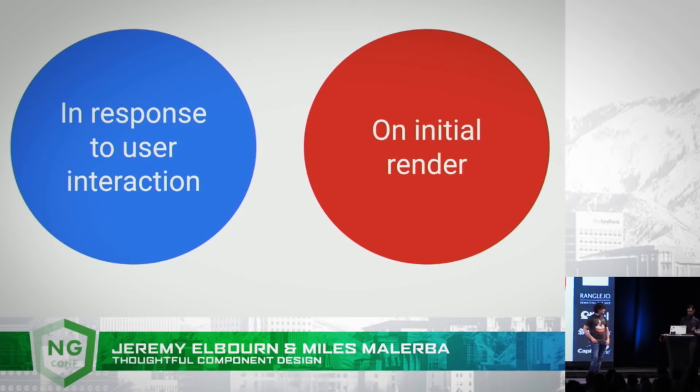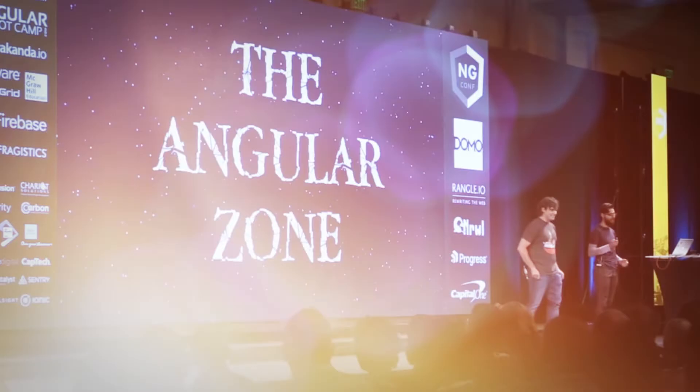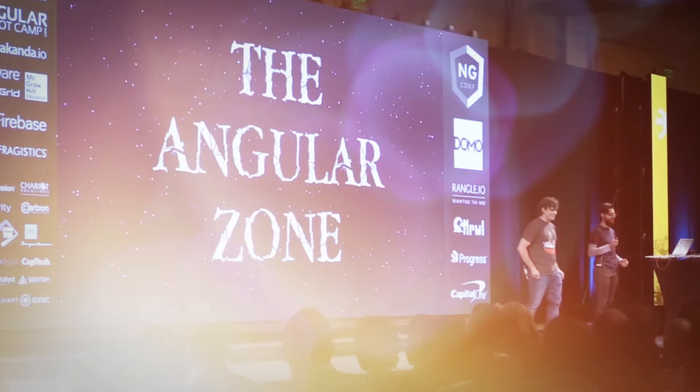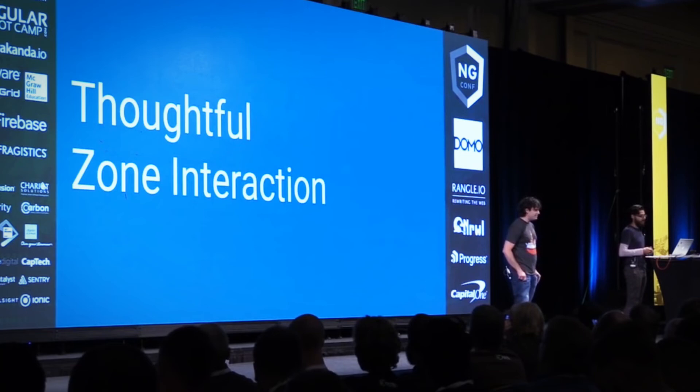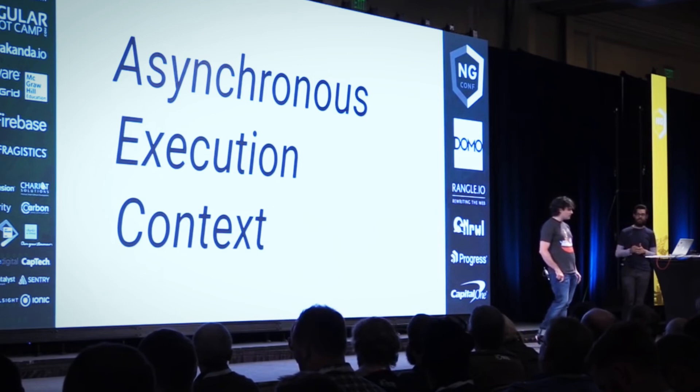Angular has really good protections built into it to guard against XSS vectors in your application. If you circumvent Angular's APIs and start building large swaths of your application on your own, in particular having thoughtful interactions with the Angular zone — if you don't know what it is, zone is something that Angular depends on. It provides an asynchronous execution context for the Angular application. There are a few more things you should probably know about building applications, but we don't have time to talk about those today.